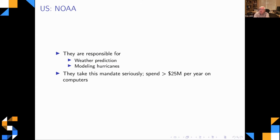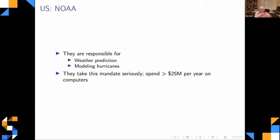Let's look at what the government does with computation. NOAA — the weather people — is responsible for weather prediction, particularly hurricane modeling. Anytime there's a hurricane, they track it and make predictions about where it's going, always shown as a growing band representing roughly a two-sigma standard deviation. There's genuine uncertainty quantification done, and those tracks are used to advise people on where to evacuate.